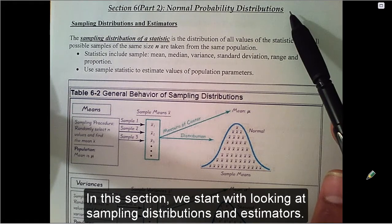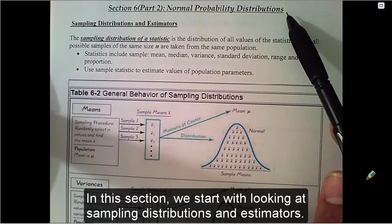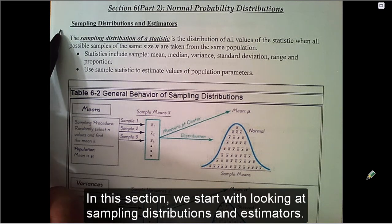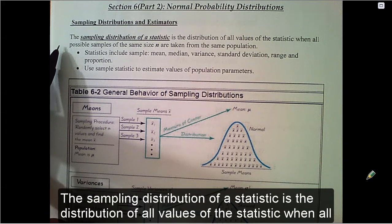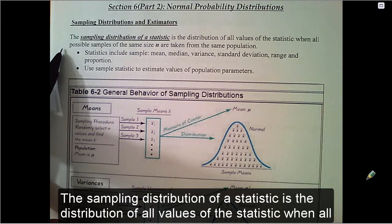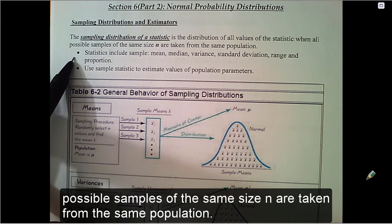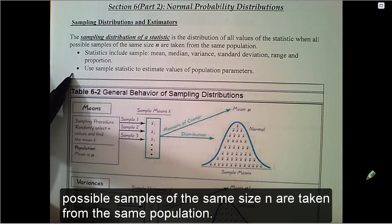In this section, we start with looking at sampling distributions and estimators. The sampling distribution of a statistic is the distribution of all values of the statistic when all possible samples of the same size n are taken from the population.